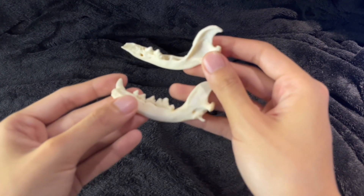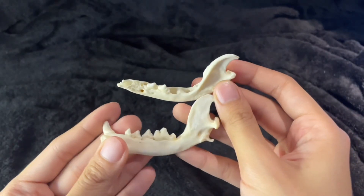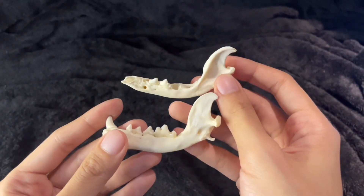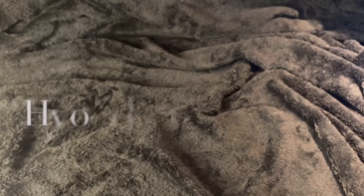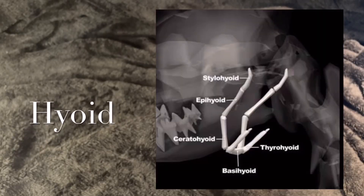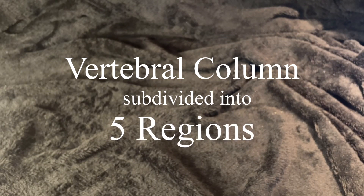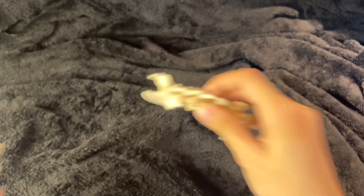The mandible is described as having the body and two rami. The hyoid apparatus is the bone situated between the vertical part of the rami of the mandibles. It supports the root of the tongue, pharynx, and larynx.